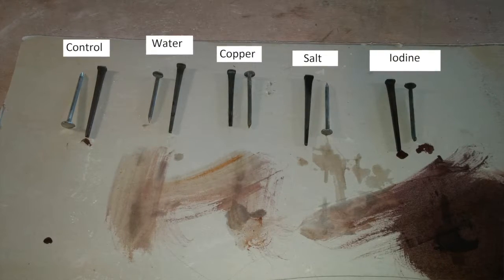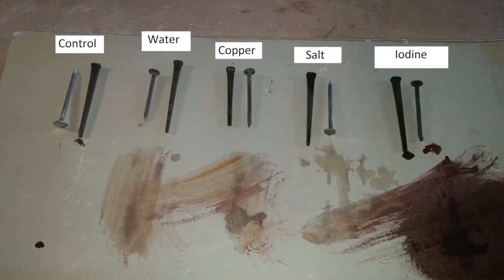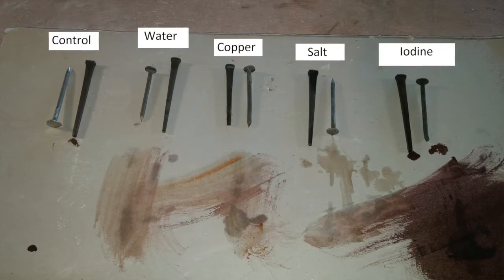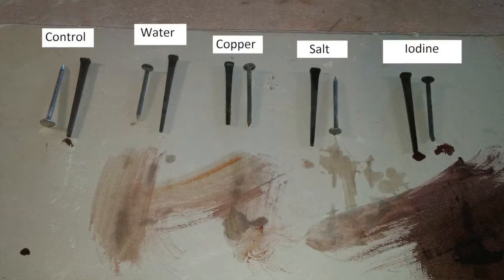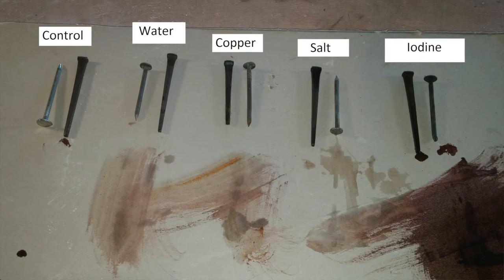Iodine seems to have the most dramatic effect on the roofing nail, and the iodine and copper have similar effect on the masonry nail. We'll see how this plays out in the book.